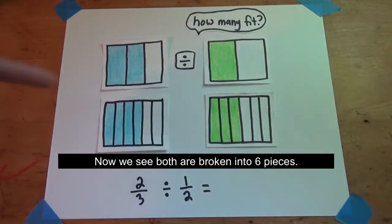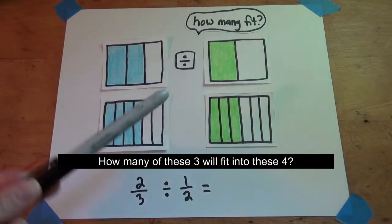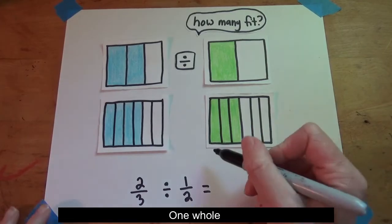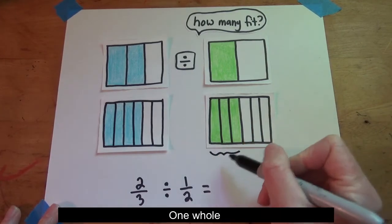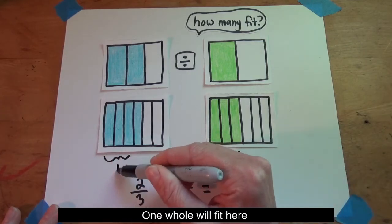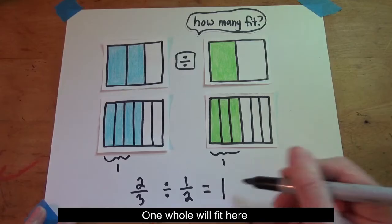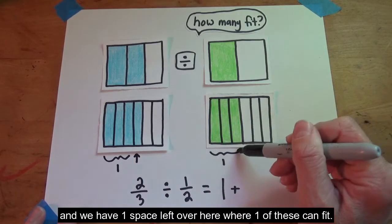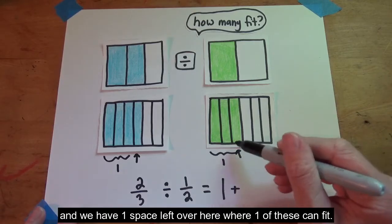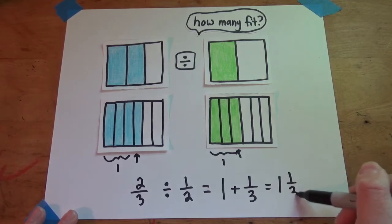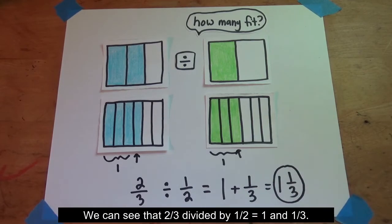Now we see both are broken into six pieces. How many of these three will fit into these four? Well, one whole will fit here, and we have one space left over here where one of these can fit, one of the three. We can see that two-thirds divided by one-half is one and one-third.